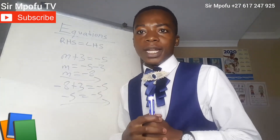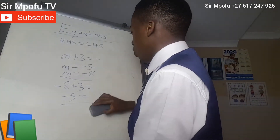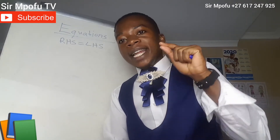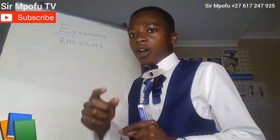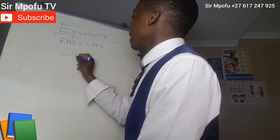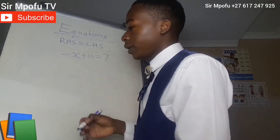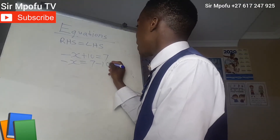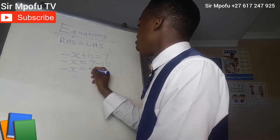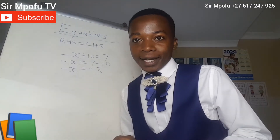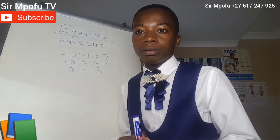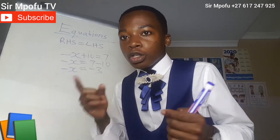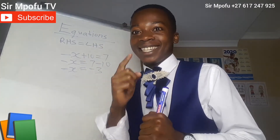Whenever you are solving equations, never leave algebra with a negative sign. For instance, let's say we have minus x plus 10 equal to 7. Change side, change side — it equals 7 minus 10, then minus x equals minus 3. How do you remove the negative sign? You don't have to divide by negative 1. Just change side, change side.